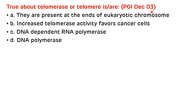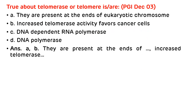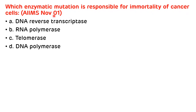The next question, asked in PGI December 2003: 'True about telomeres or telomerase — they are present at the end of eukaryotic chromosomes, increased telomerase activity favours cancer cells, DNA-dependent RNA polymerase, or DNA polymerase.' As discussed, it is RNA-dependent DNA polymerase with reverse transcriptase activity. The correct answers are A and B. Another question, asked in AIIMS November 2001: 'Which enzymatic mutation is responsible for immortality of cancer cells — DNA reverse transcriptase, RNA polymerase, telomerase, or DNA polymerase?' The correct answer is telomerase.